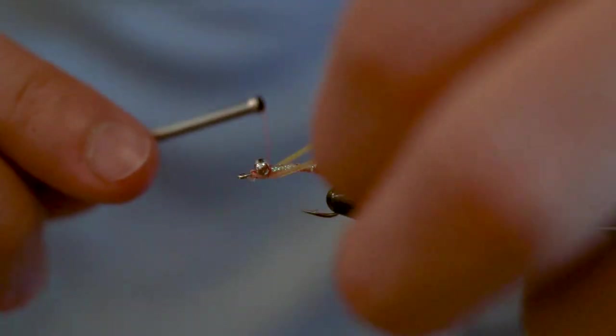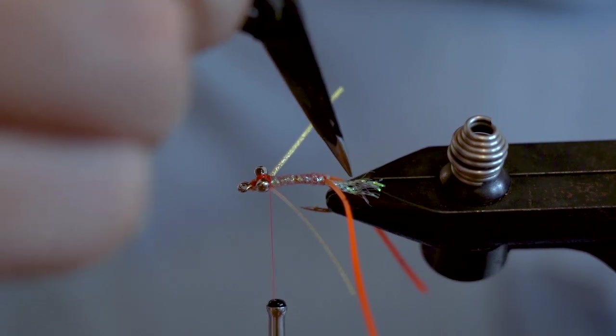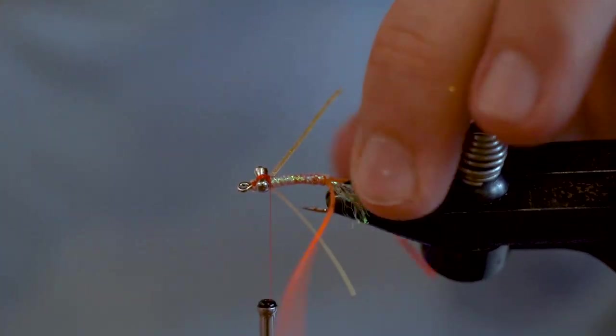At this stage you can also use the point of your scissors or bodkin to split those materials that form the diamond braid to spread out your tail.